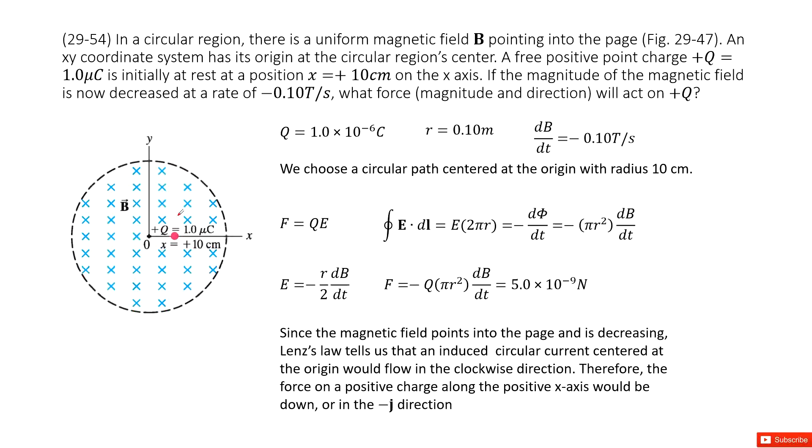So let's look at this system. In this circular region, we have a uniform magnetic field B pointing inward. And at this location, we have a positive charge. So now if the magnitude of magnetic field is decreased, what force magnitude and direction will act on this charge q?